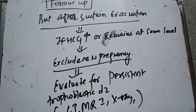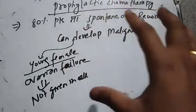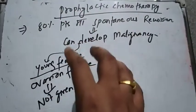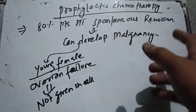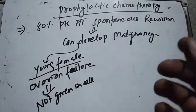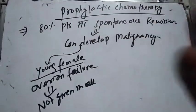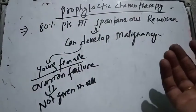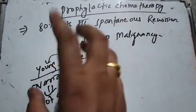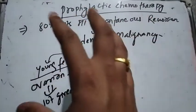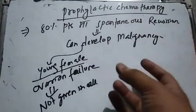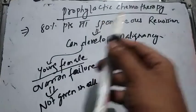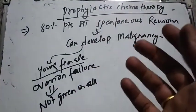Now let's talk about prophylactic chemotherapy. About 80% of patients have spontaneous remission. However, the disease can recur and develop into malignancy, which is a very serious condition. If the patient is on regular follow-up, the condition can be monitored and managed.